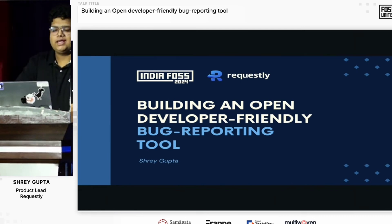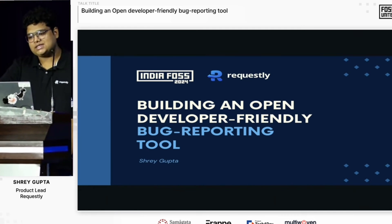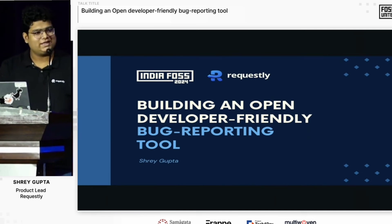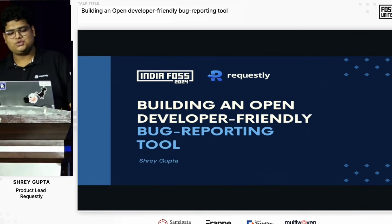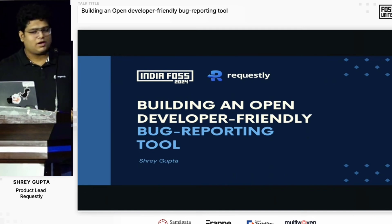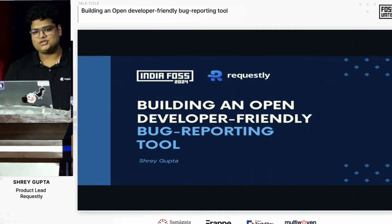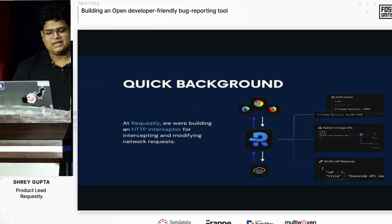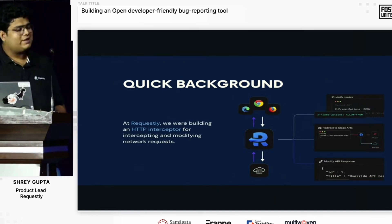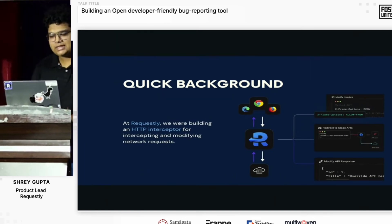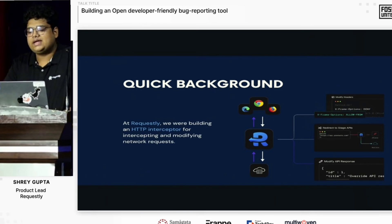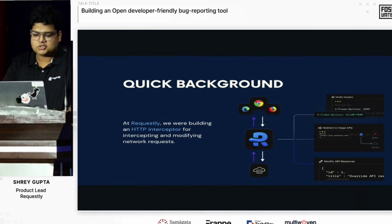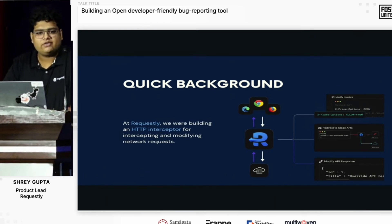Today I'll be sharing how a particular set of users started using Requestly in a way it was not intended to, and how that eventually led a new product line to be developed. Quick background: Requestly is an HTTP interceptor, an open source alternative to Charles proxy. It helps you modify headers, override responses, redirect across environments, and it is mainly used by front-end folks.